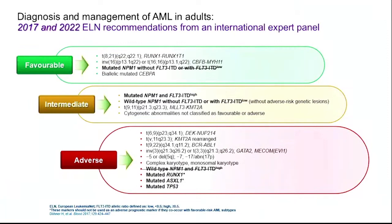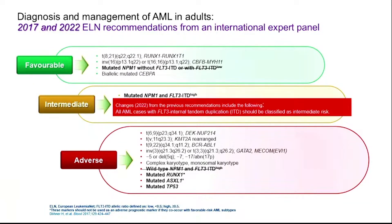With the new ELN 2022 classification, there was previously a lot of debate about whether to transplant patients with NPM1-mutated and low allelic ratio FLT3, especially without a good MRD marker. Now, all FLT3 is classified as intermediate risk — no more favorable risk for FLT3 — so we should advocate that any FLT3-mutated AML patient, if eligible, should proceed for upfront transplant. There are several other changes in the ELN criteria as well.